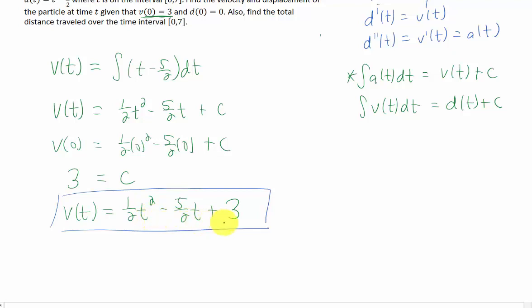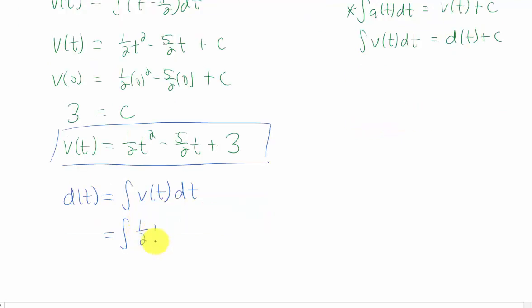We also need to find the displacement function, and we know from this information up here that that function for displacement is equal to the integral of the velocity function. That means we need to integrate this function that we found in part one of the problem, which using our power rule is going to give us 1 sixth t cubed minus 5 fourths t squared plus 3t plus some other constant.